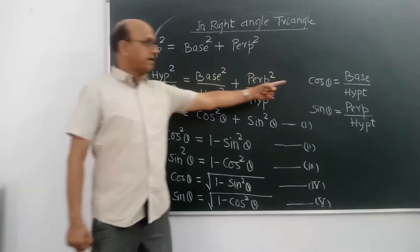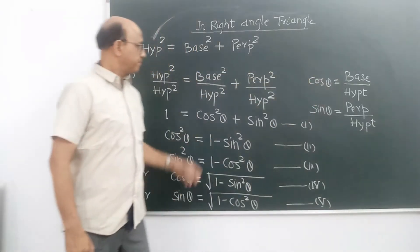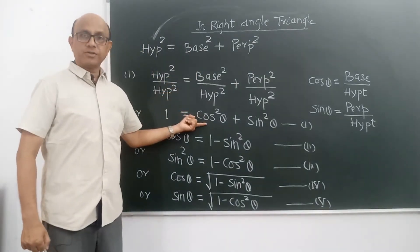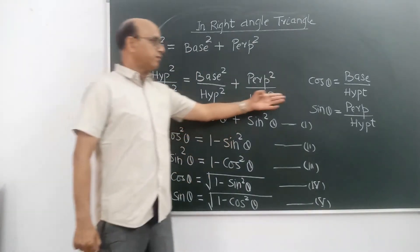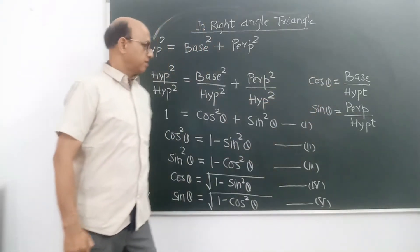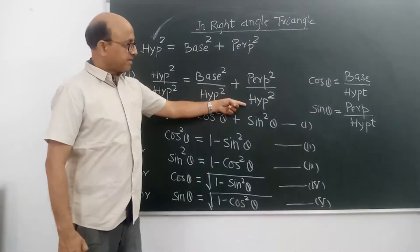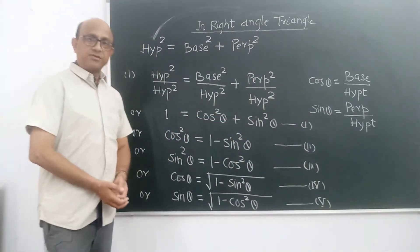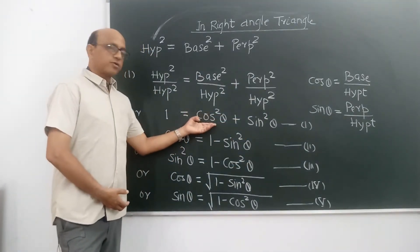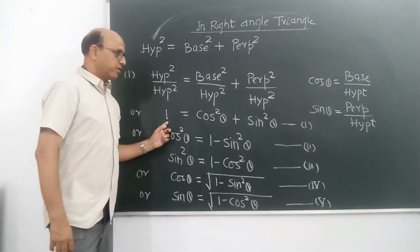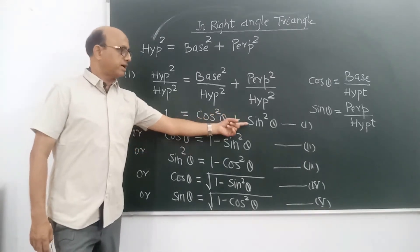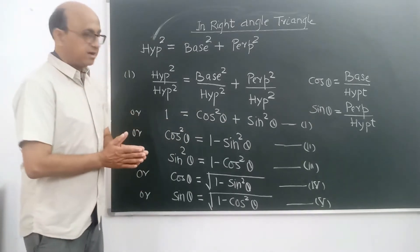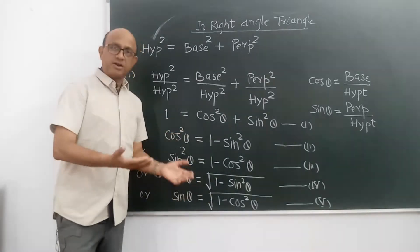As we know, cos theta is base upon hypotenuse, aur yahan base square upon hypotenuse square hai, to yeh ban jaayega cos square theta. As we know, sin theta is equal to perpendicular upon hypotenuse, to yeh ban jaayega sin square theta. In this way we get the relationship: cos square theta plus sin square theta is equal to 1, or sin square theta plus cos square theta is equal to 1.